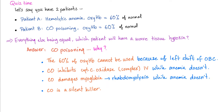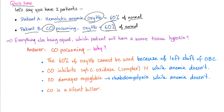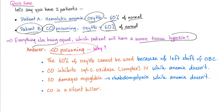First, let me help you answer the question from last time. You have two patients: Patient A has hemolytic anemia with oxyhemoglobin at 60% of normal, and Patient B has carbon monoxide poisoning with oxyhemoglobin also at 60% of normal. Everything else being equal, which patient will have worse tissue hypoxia? The answer is B — carbon monoxide poisoning.